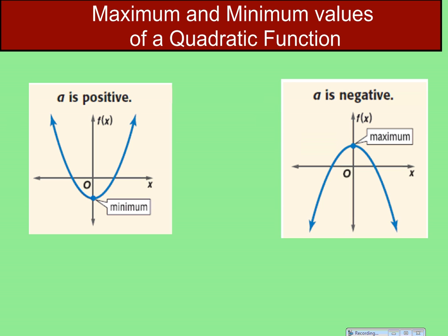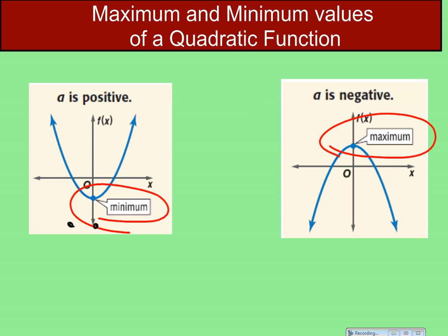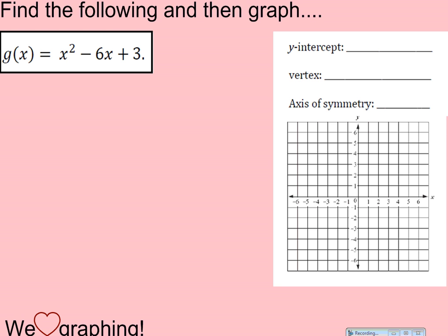If a is positive, the parabola opens up; if a is negative, it opens down. When it opens up, the vertex is a minimum — the graph won't go any lower. When it opens down, the vertex is a maximum — the graph tops out there. Now let's look at an example: x² − 6x + 3. Here a = 1, b = −6, c = 3.